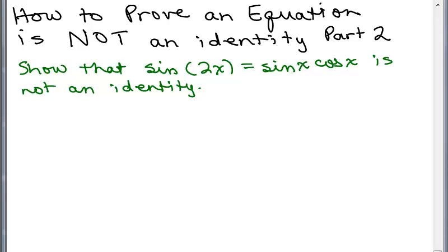What I do is, if I can, I let x equal 0 and try that. If it doesn't work — in other words, if I do get the same number on both sides — then I might try something else. So I'm going to try x equals 0.